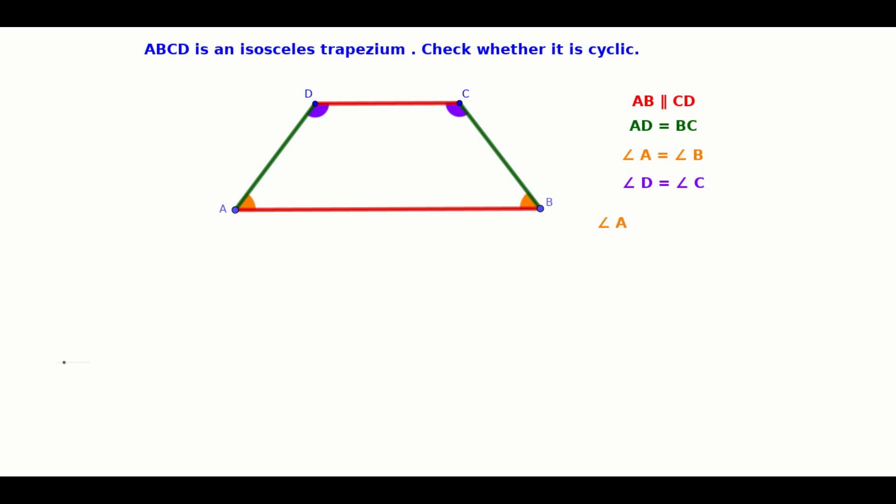That is, angle A plus angle D equals 180 degrees. Also, angle B plus angle C equals 180 degrees.